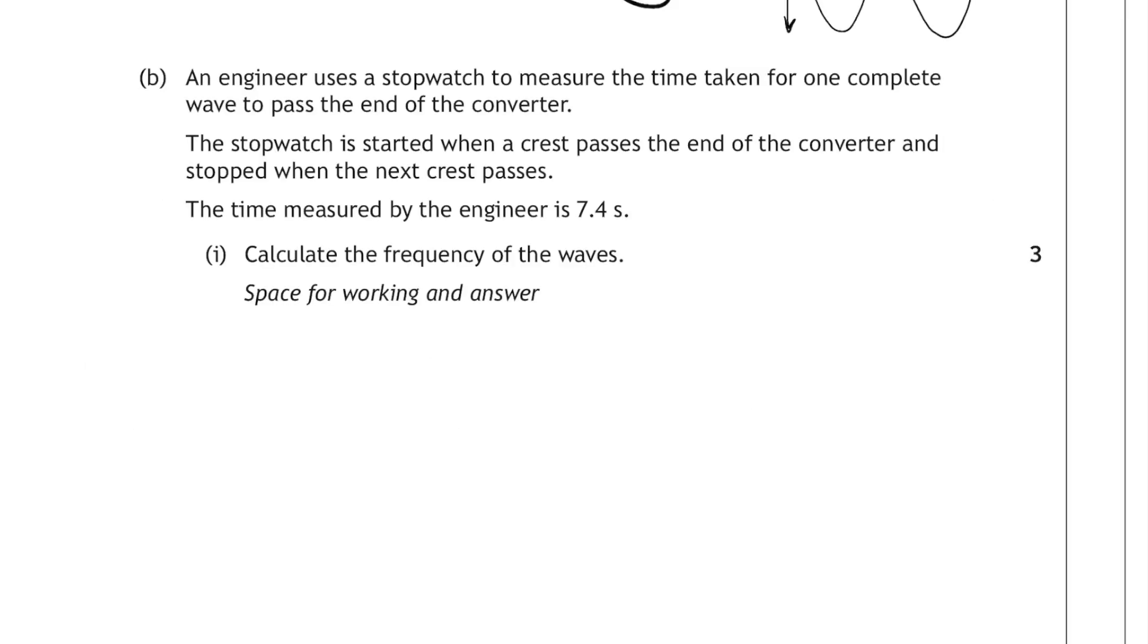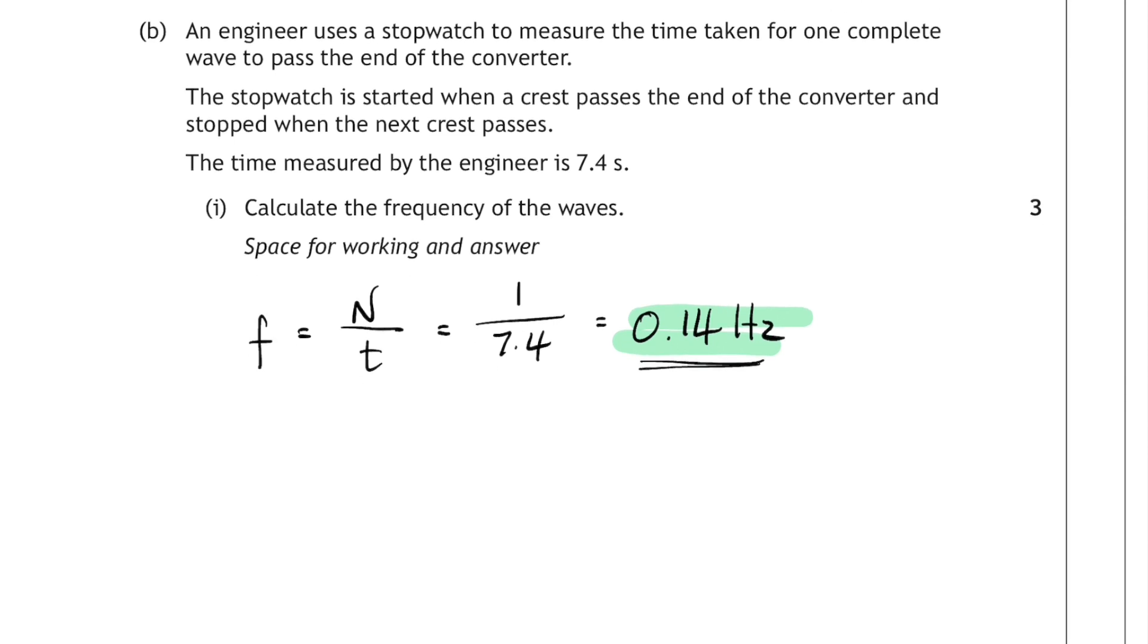Part B, an engineer uses a stopwatch to measure the time taken for one complete wave to pass the end of the converter. The stopwatch is started when a crest passes the end of the converter, and stopped when the next crest passes. The time measured by the engineer is 7.4 seconds. In part 1 we have to calculate the frequency of the waves. So straight to your relationship sheet, frequency is the number of waves per second, or the number of waves divided by the time taken. In this case we've got one wave that's produced in a time of 7.4 seconds. That gives us a frequency of 0.14 Hz.